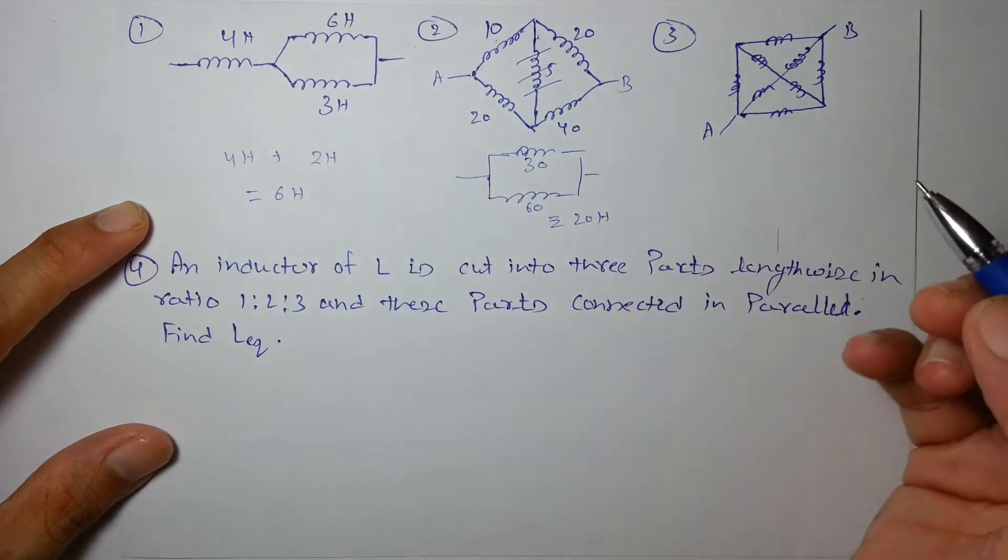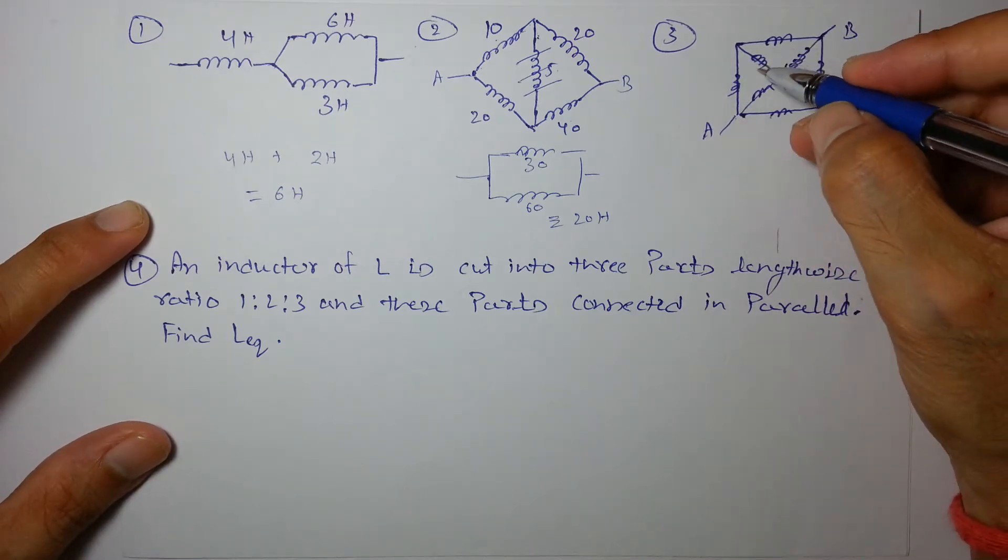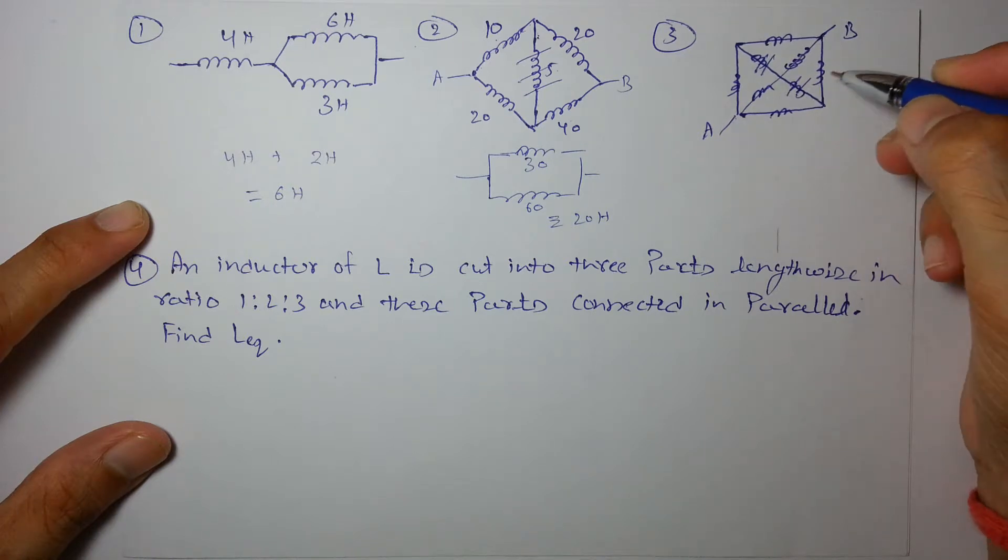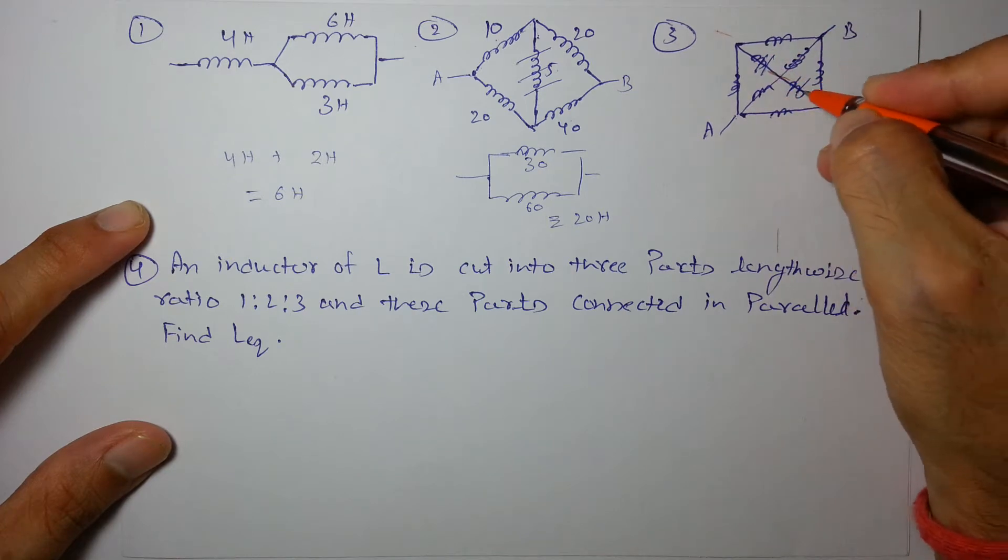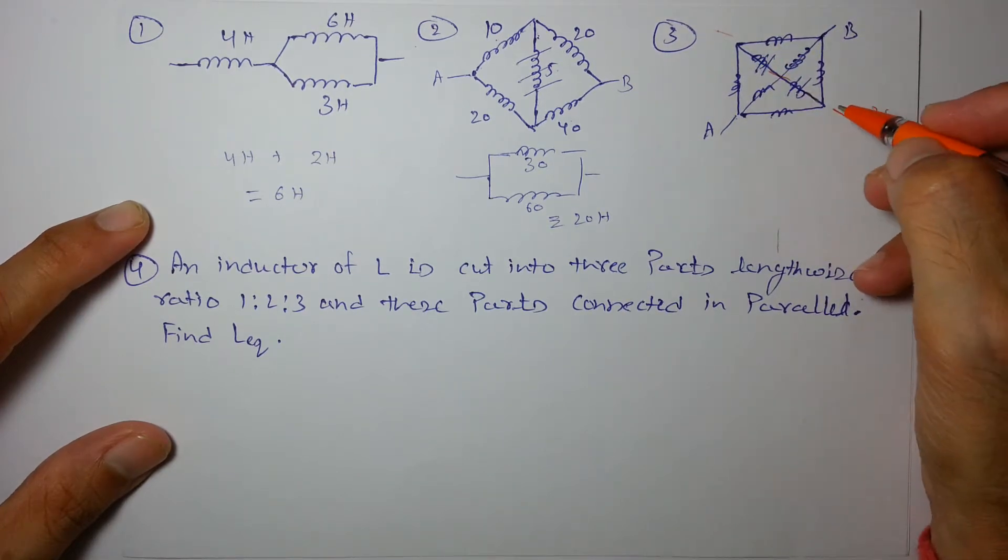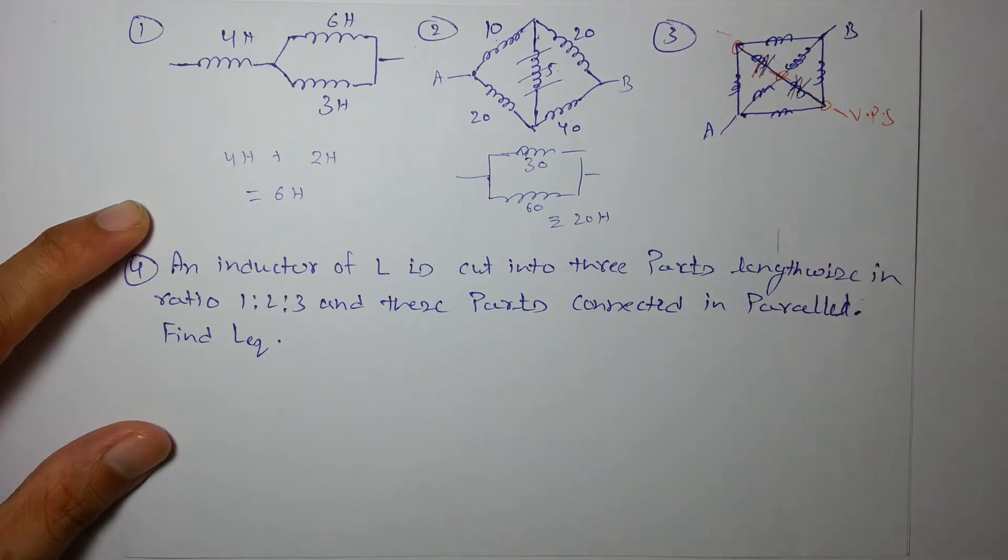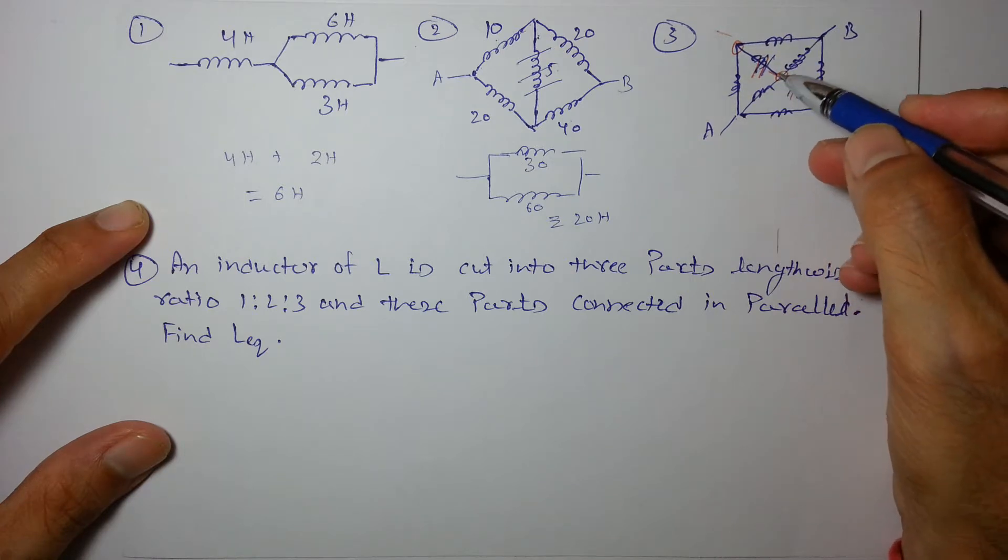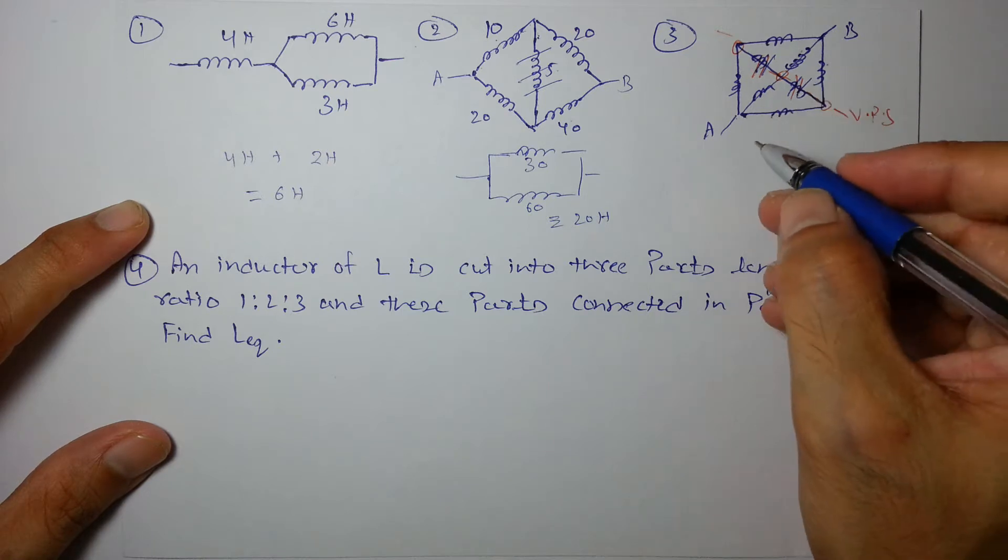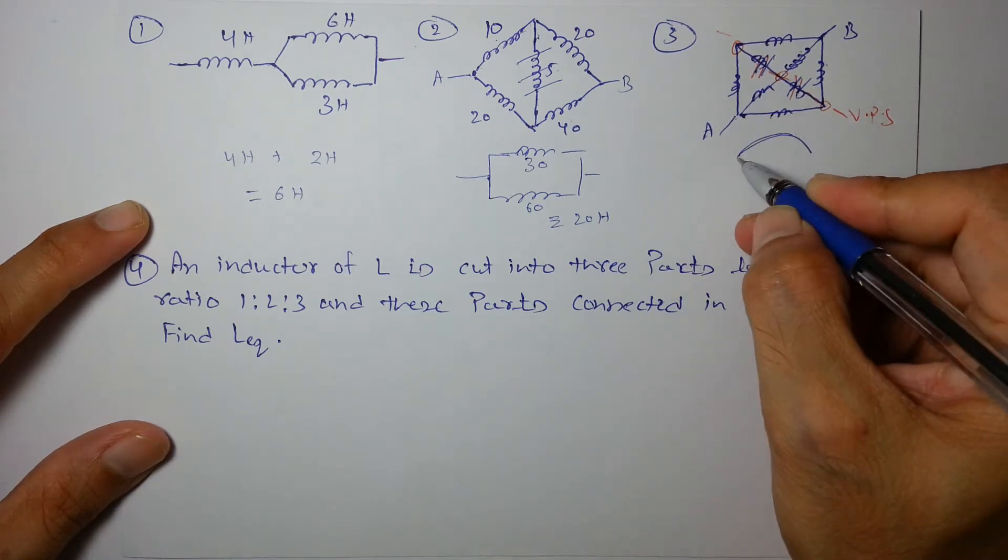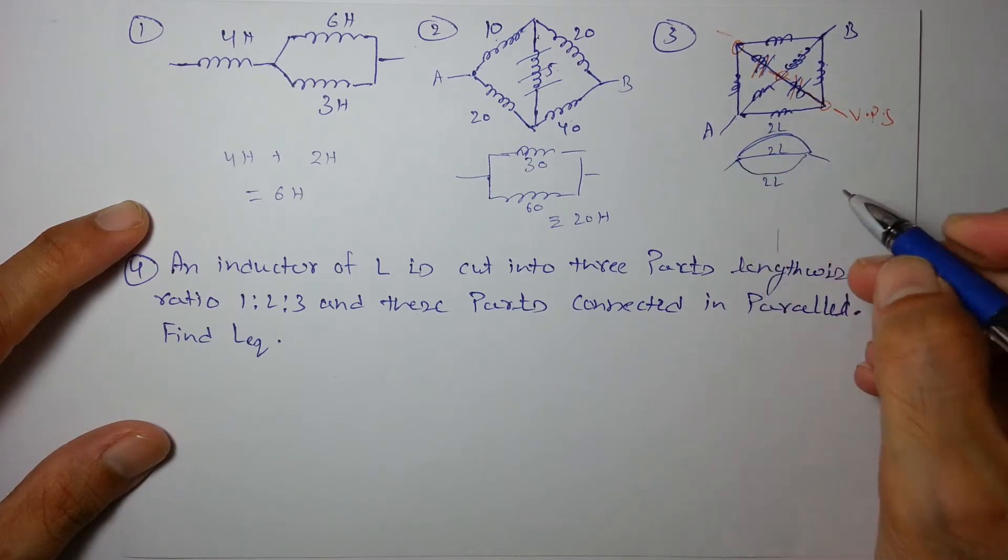And equivalent across AB, you should know how to solve this using symmetry. These two inductors can be removed because this will be the vertical plane of symmetry and these points will be at equal potential. So we can remove these. Two inductors will be left: 2L, 2L, and 2L all in parallel. So 2L, 2L, 2L all in parallel will give you nothing but 2L/3 as equivalent.